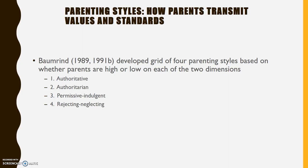Authoritarian parents are also high in restrictiveness, but low on warmth and responsiveness. These two can be difficult to distinguish because the words are similar. Authoritative: high restrictiveness, high warmth and responsiveness. Authoritarian: high restrictiveness, low warmth and responsiveness. Then we have permissive indulgent, which is low restrictiveness but high warmth and responsiveness. And then rejecting and neglecting, which is low on both — low on restrictiveness and control, and also low on warmth and responsiveness.